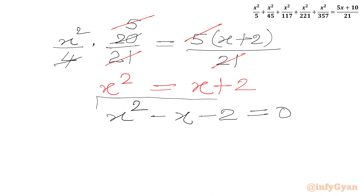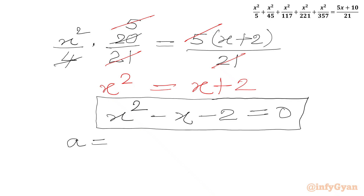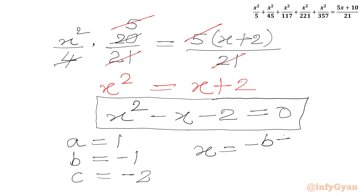This is a quadratic equation. We can use the method of factorization or the quadratic formula method — let us use the quadratic formula. The coefficient of x squared is a equals 1, b equals the coefficient of x which is minus 1, and c equals the constant minus 2. The formula is x equals minus b plus or minus square root of b squared minus 4ac, all over 2a.